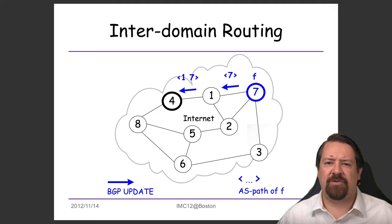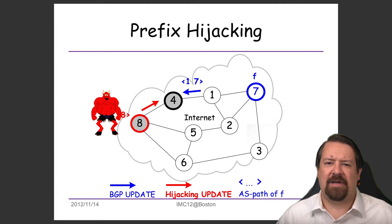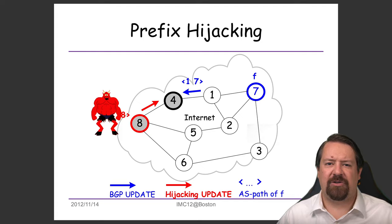BGP is the glue that holds the internet together. Here we have an AS-level graph showing the AS paths being advertised from one autonomous system to another. AS7 is advertising prefix F with path 7 to AS1. Then AS1 advertises the same prefix with AS path 1-7, and it reaches AS4. However, malicious AS8 is also advertising prefix F with an AS path of 8. When AS4 sees these two paths to F, it defaults to taking the shorter one, routing traffic to AS8. AS8 has either caused a partial denial of service against AS7, or is doing something malicious such as a man-in-the-middle attack before forwarding traffic to AS7.